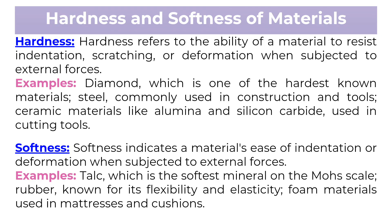Hardness and softness of materials. Hardness refers to the ability of a material to resist indentation, scratching, or deformation when subjected to external forces. Examples of hard materials include diamond, which is one of the hardest known materials; steel, commonly used in construction and tools; and ceramic materials like alumina and silicon carbide, used in cutting tools.